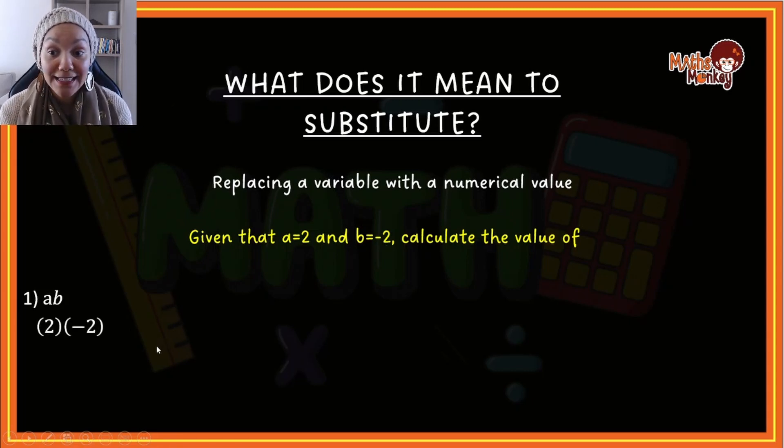In this case it would look like this: I've got a 2 and I've got a negative 2, multiplied with each other. So that gives me negative 4.